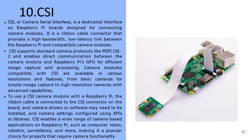CSI enables direct communication between the camera module and the Raspberry Pi's CPU for efficient image capturing and processing. Camera modules compatible with CSI are available in various resolutions and features, from basic cameras for simple image capture to high-resolution cameras with advanced capabilities. To use a CSI camera module, the ribbon cable is connected to the CSI connector on the board, and camera drivers or software may need to be installed and configured using APIs or libraries. CSI enables applications such as computer vision, robotics, surveillance, and more.